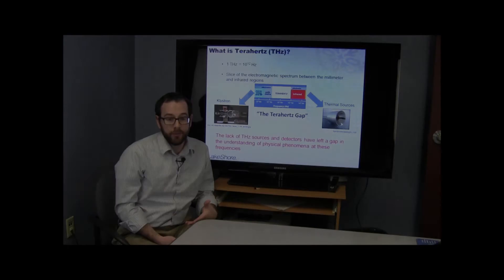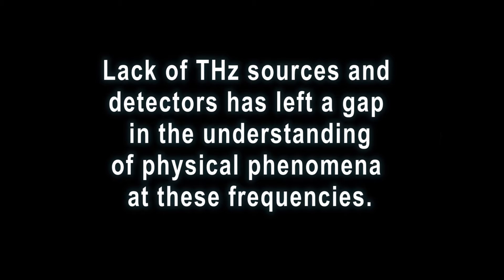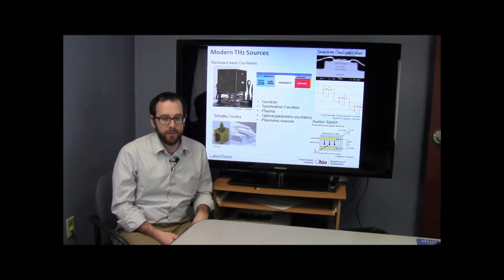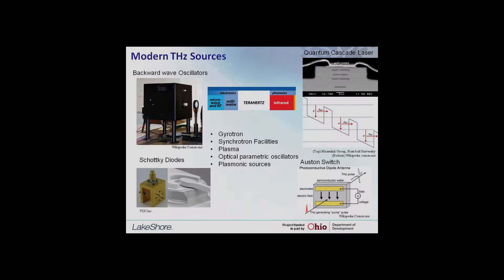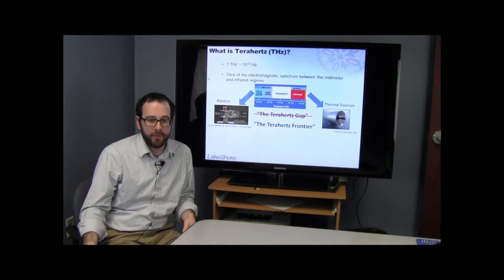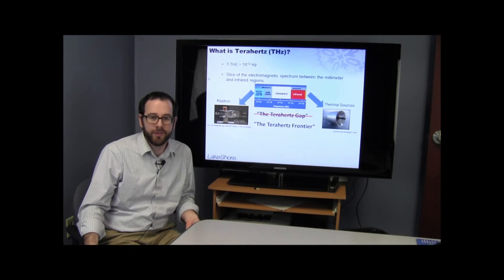This lack of terahertz sources and detectors really left a gap in our understanding of physical phenomena that occurs at these frequencies. That's changed a lot in the last 20 years, and there's a bevy of modern terahertz sources — both electronic sources like backwards wave oscillators and Schottky diodes, and also on the light side, infrared sources, quantum cascade lasers, and one of my favorites, the photoconductive Auston switch. With these modern sources of terahertz radiation, the terahertz gap is now what I would consider no longer a terahertz gap, but actually a terahertz frontier.